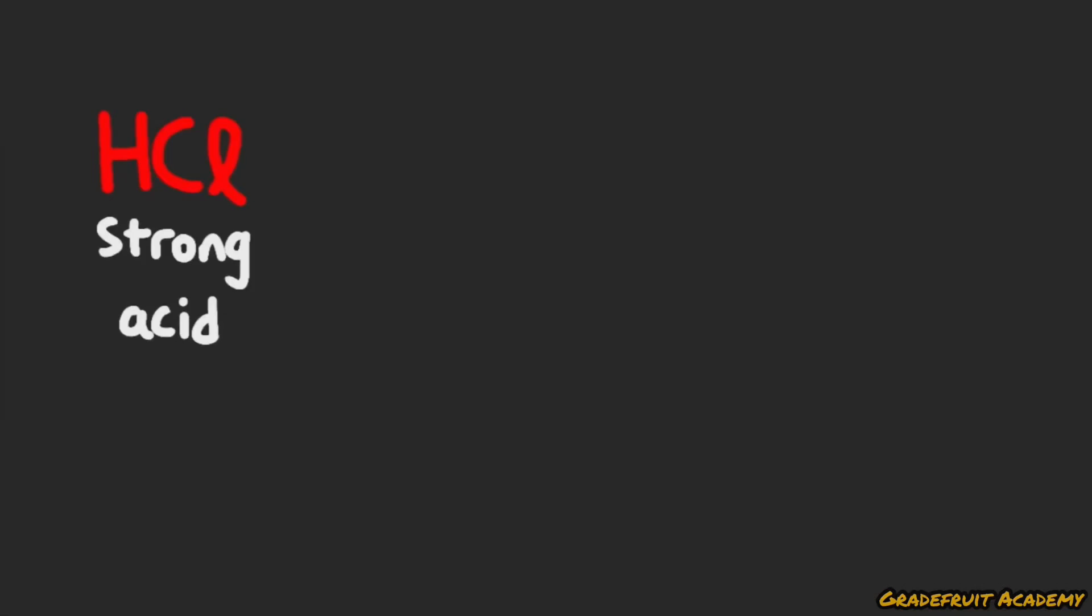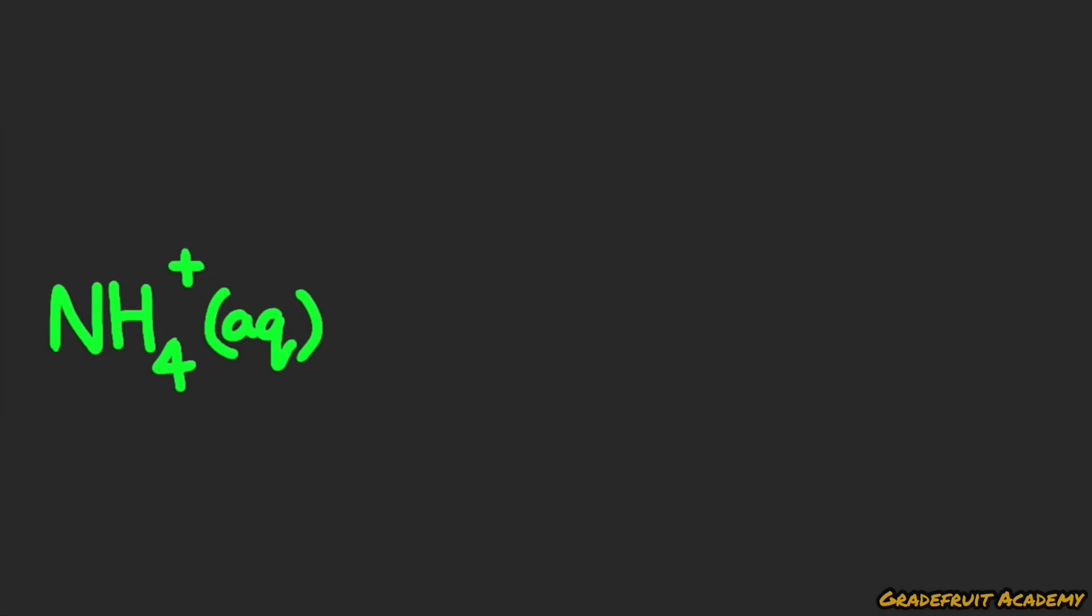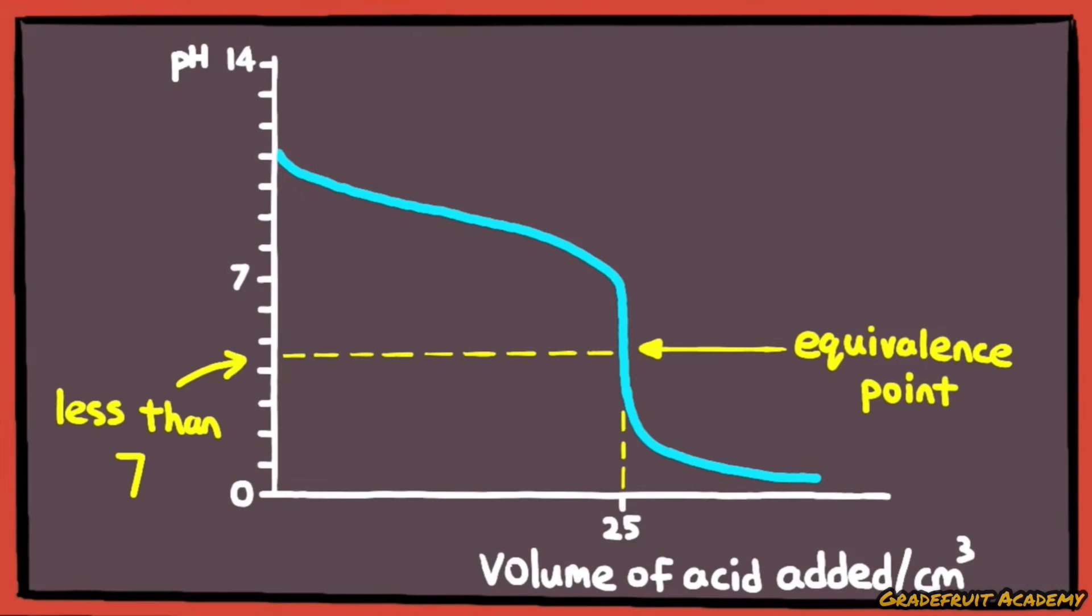For example, when a strong acid reacts with a weak base, the conjugate acid of the weak base will react with water, aka hydrolyze in water, to produce hydronium ions, which causes the pH of the salt to be below 7, hence making it acidic.